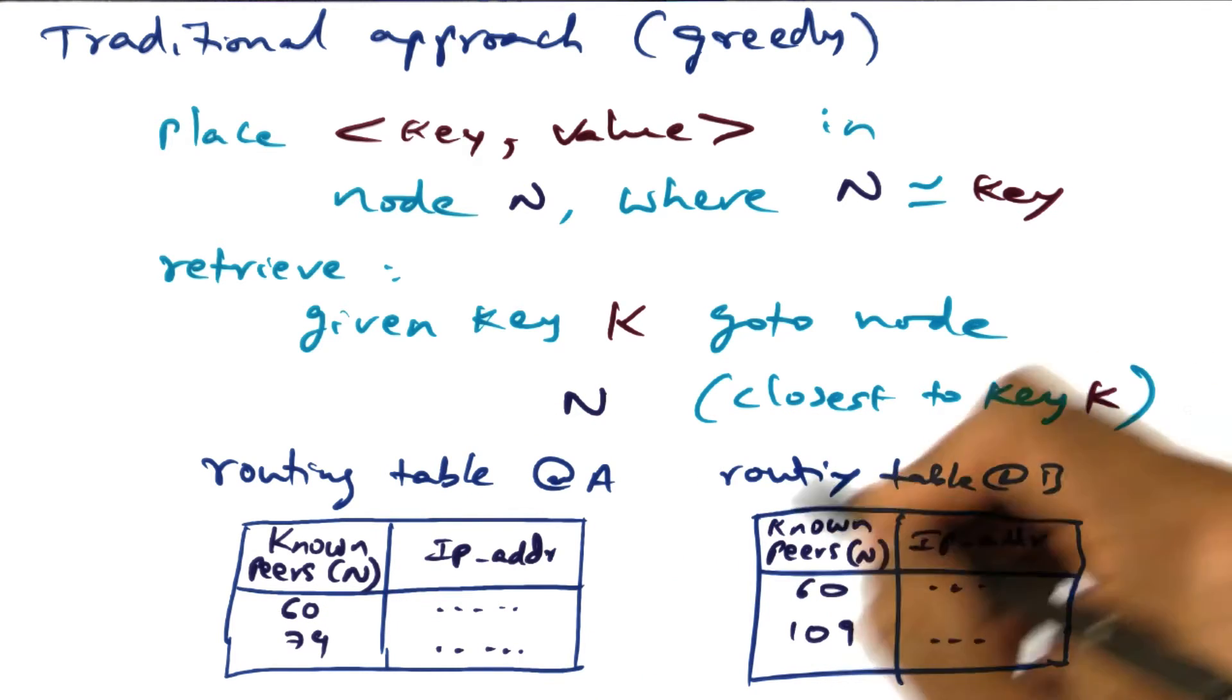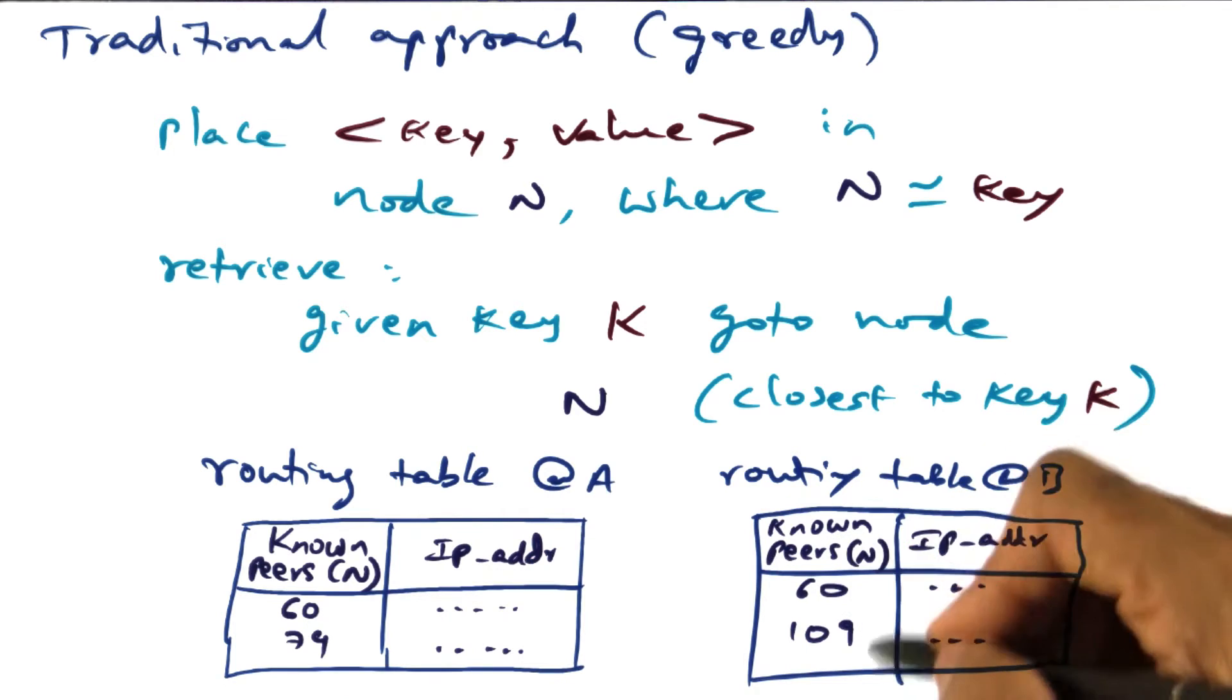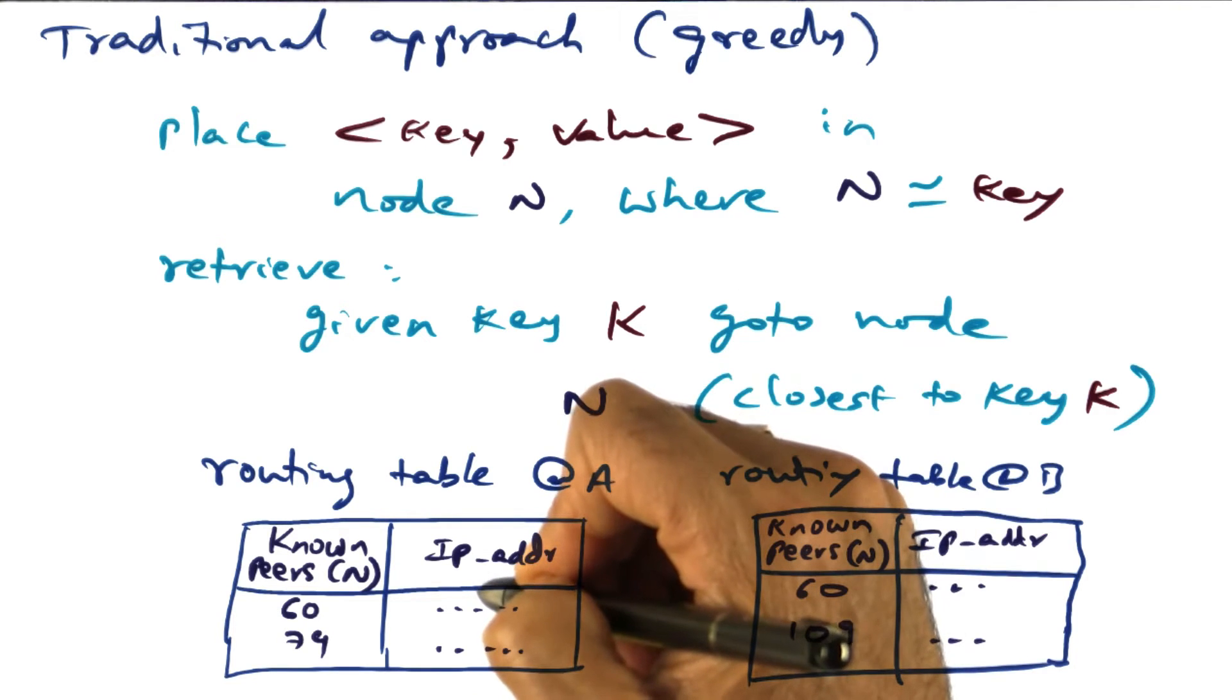Similarly for 79, over here node B knows how to communicate with 60, knows how to communicate with 109. And if these are the only entries that are in the routing tables of A and B, these are the ones to which node A knows how to communicate directly.